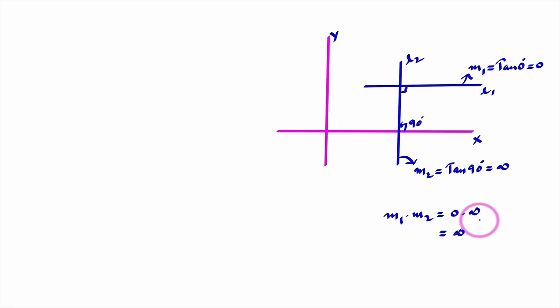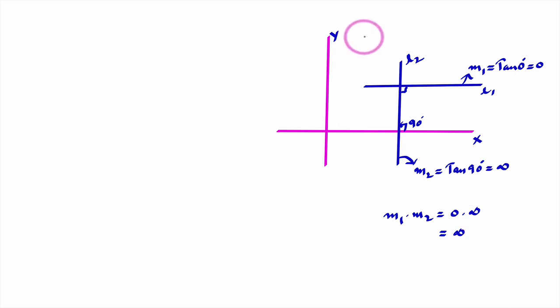Two non-vertical lines are perpendicular only if the product of their slopes is minus 1. I hope you understand this class. In the next class, we will learn the proof of the angle between two lines formula.